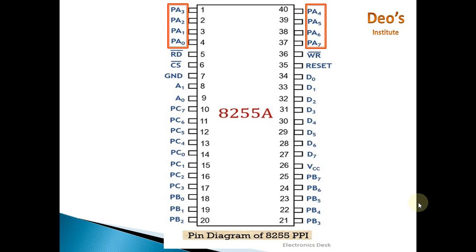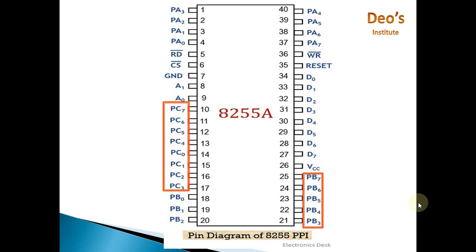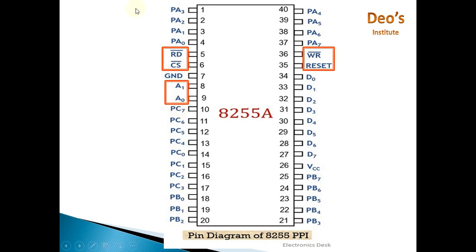PB0 to PB7 are Port B pins — again 8 bidirectional IO pins connected to the Port B data buffer. PC0 to PC3 connect to Port C lower and PC4 to PC7 connect to Port C upper data buffer. The RD bar, chip select bar, WR bar, and reset pins are all connected to the read/write control logic.